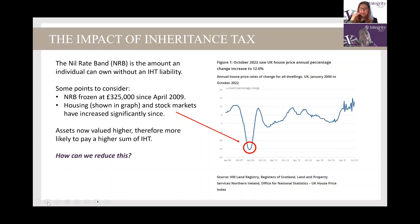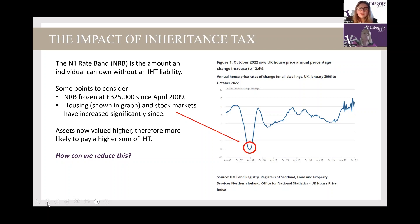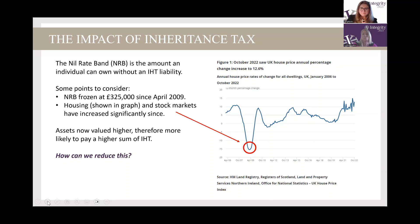The 40% applies above the nil rate band — essentially how much you can pass on to whomever you want without an inheritance tax liability. They've frozen the nil rate band at £325,000 since April 2009. That hasn't changed in a very long time, but what has changed is housing — house prices have increased significantly since April 2009 and stock markets have increased as well. So assets are generally higher, estates are higher, and more and more people are being pushed into the band above the nil rate band. The big question is: how can we reduce this?